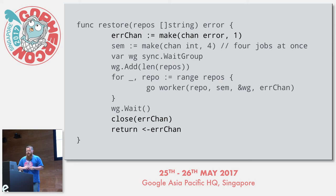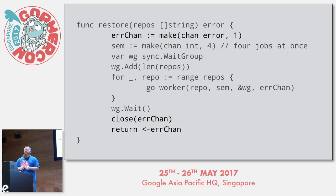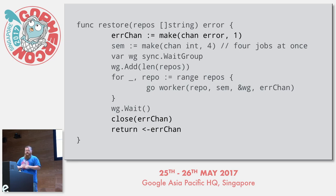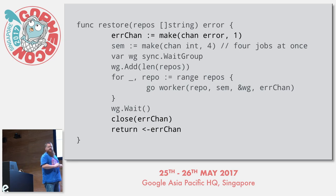As a bonus question: the read from errChan in restore is guaranteed to never block — even if all calls to fetch succeed. How does this work? You can answer me after the questions.